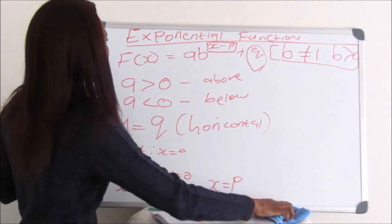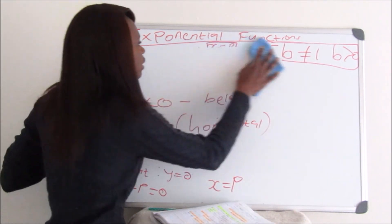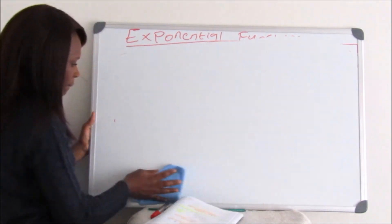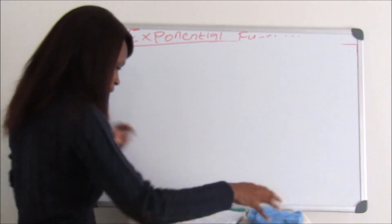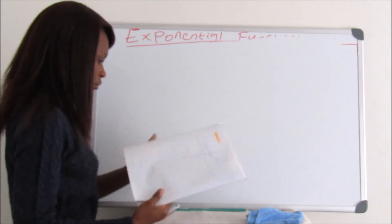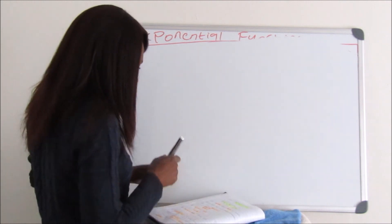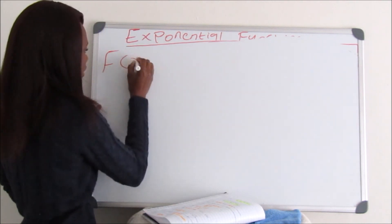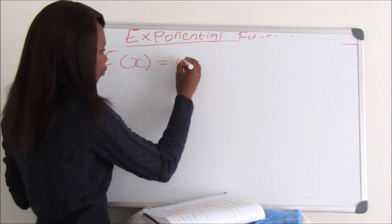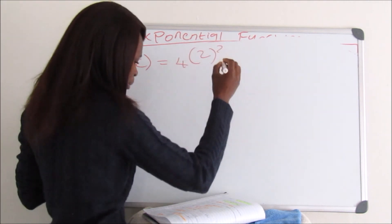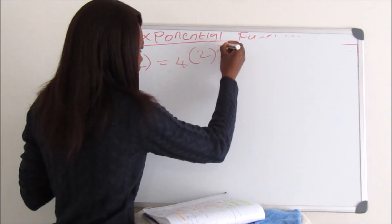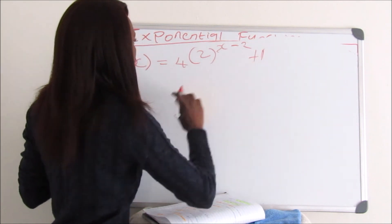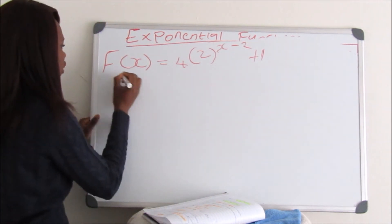Now let's look at an example. We are given the equation f(x) equals 4 times 2 to the exponent of X minus 2, plus 1. Remember, with exponential functions, our standard equation is AB to the exponent of X minus P plus Q.